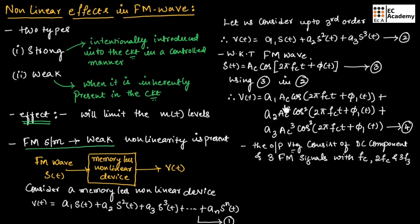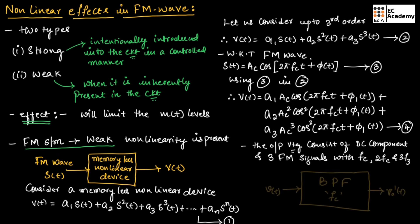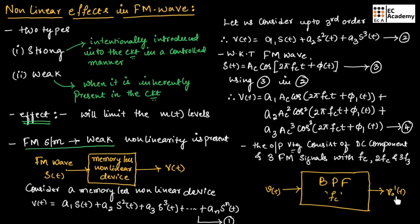This output voltage consists of DC components along with three FM signals with frequencies Fc, 2Fc, and 3Fc. From these three FM signals, to get the desired FM signal, we can pass this signal through a band-pass filter. If we consider the band-pass filter with center frequency Fc, only the signal with carrier frequency Fc will be allowed and all other signals will be eliminated, so only the desired signal will be obtained.